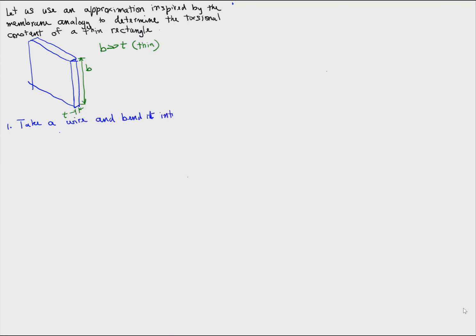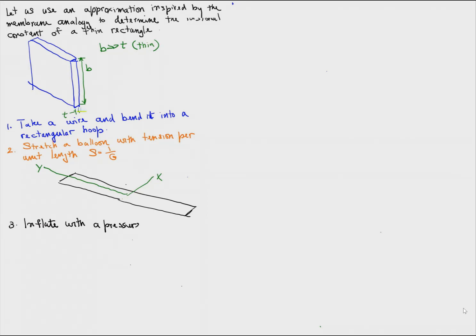So let's follow the membrane analogy. Take a wire and bend it in the shape of a rectangular hoop because the shape of the cross-section is a rectangle. We stretch a balloon with tension per unit length S equals 1 over the shear modulus G. Inflate the balloon with a pressure P equals twice the twist theta, which causes the balloon to deflect like this.